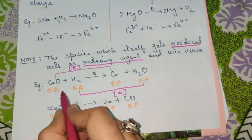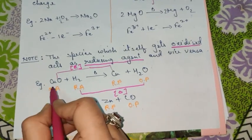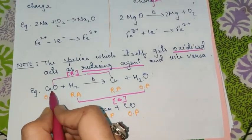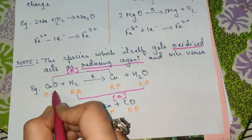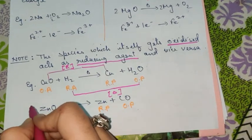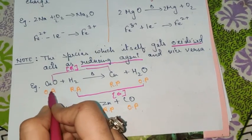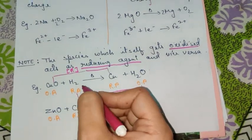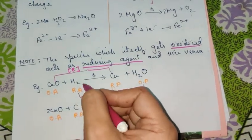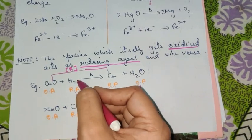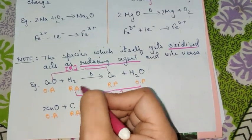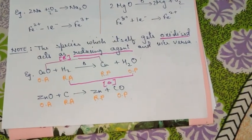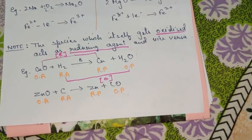Here is a useful trick: whenever you see any reactant which has oxygen in it, it will behave as an oxidizing agent in 90% of cases. And if any reagent has hydrogen in it, it will behave as a reducing agent. This can be used as a trick to identify agents quickly.